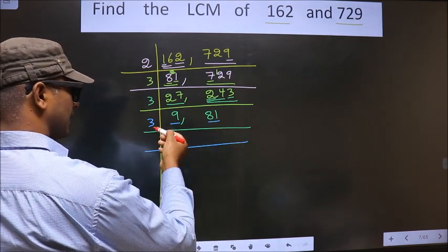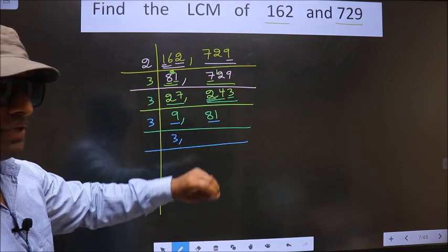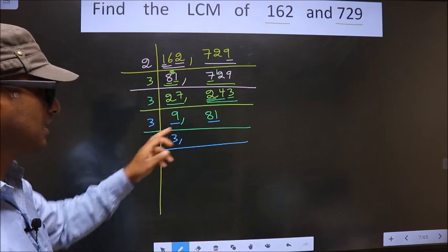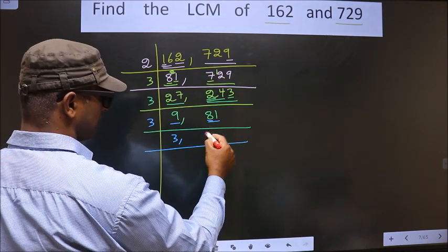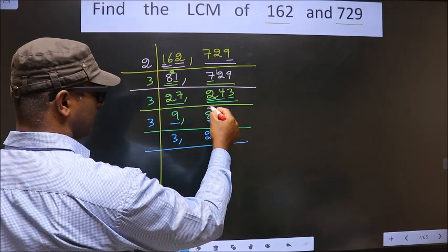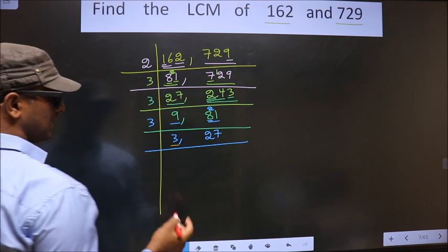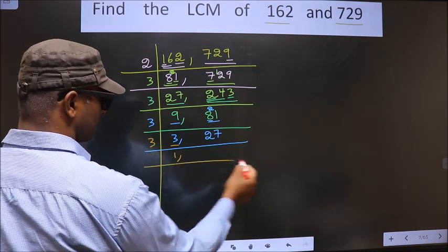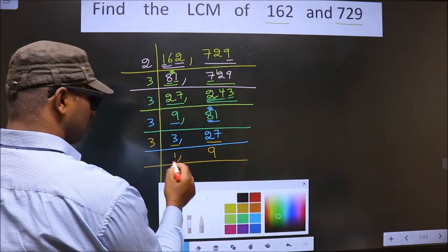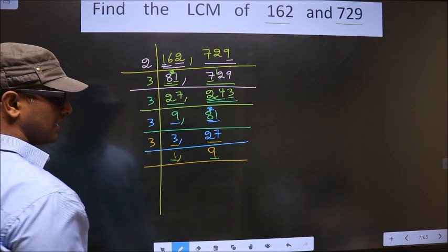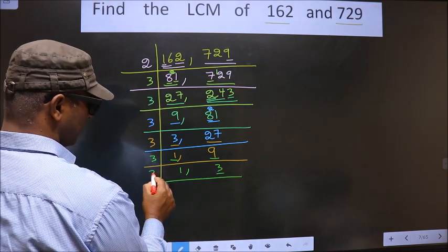Now, is 81 divisible by 3? Yes. We check by adding the digits: 8 plus 1 gives 9, and 9 is divisible by 3. So this number is also divisible by 3. The first number is 8; a number close to 8 in the 3 table is 6. 8 minus 6 is 2, carried forward making it 21. When do we get 21 in the 3 table? 3 sevens are 21. Here we have 3, which is a prime number, so we take 3 ones are 3. The other number is 27; when do we get 27 in the 3 table? 3 nines are 27. Now we got 1 here, so we focus on the next number, which is 9. 9 is 3 threes. Since 3 is a prime number, we take 3 ones are 3.